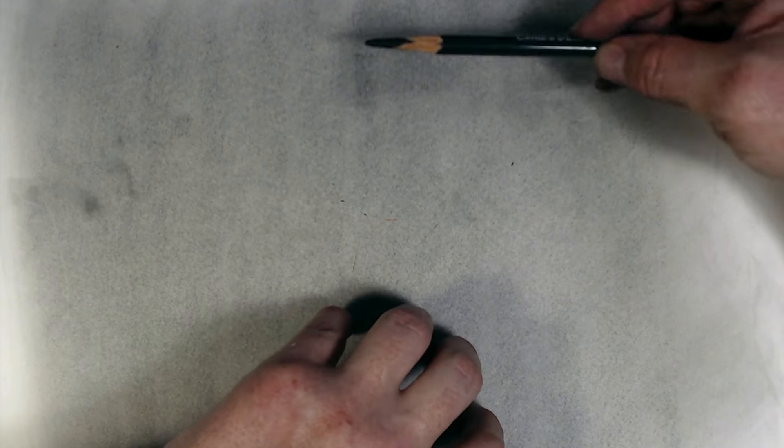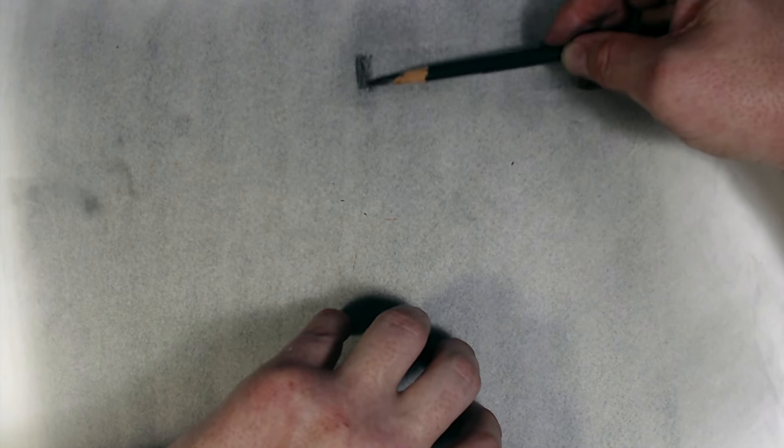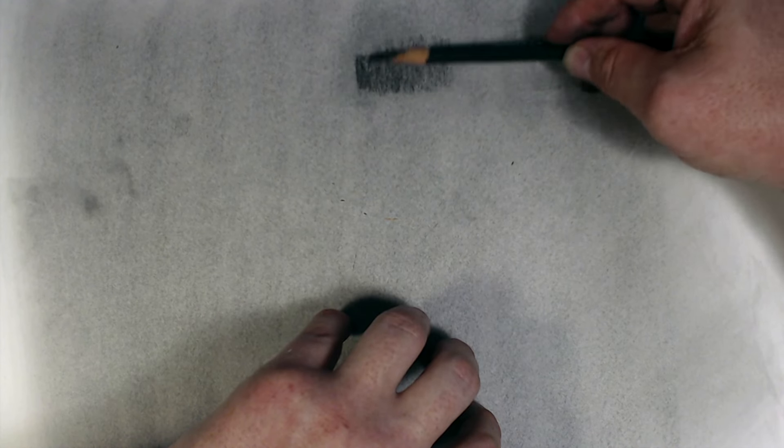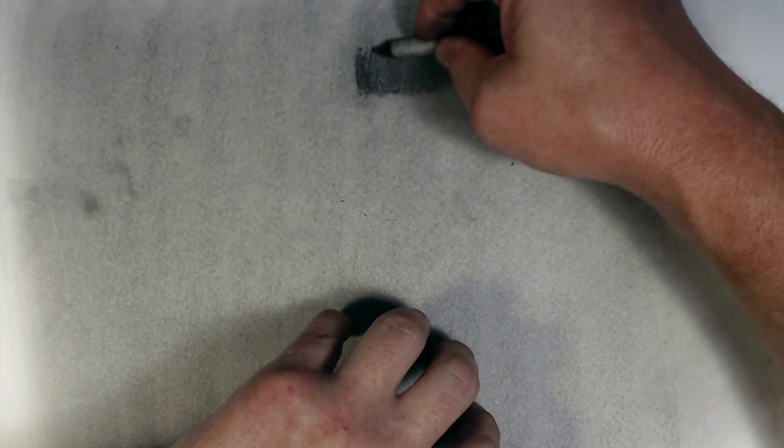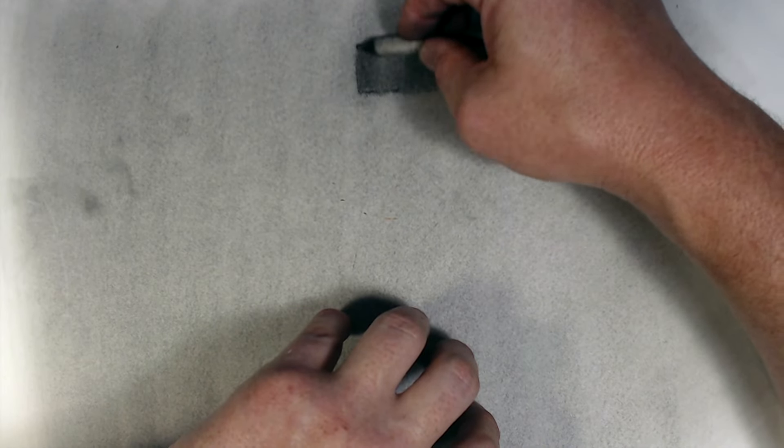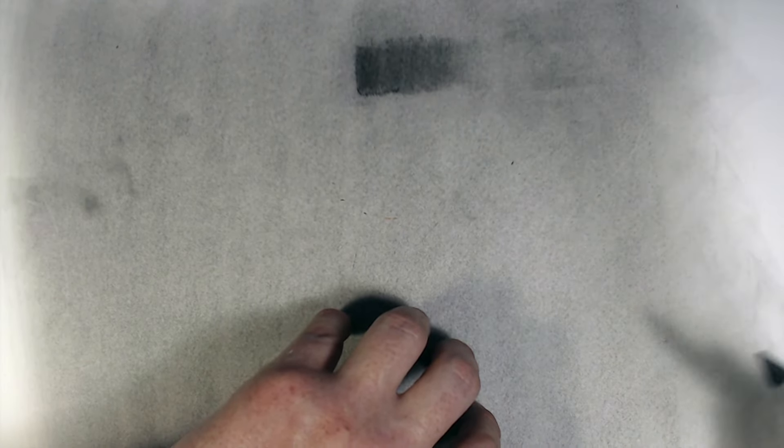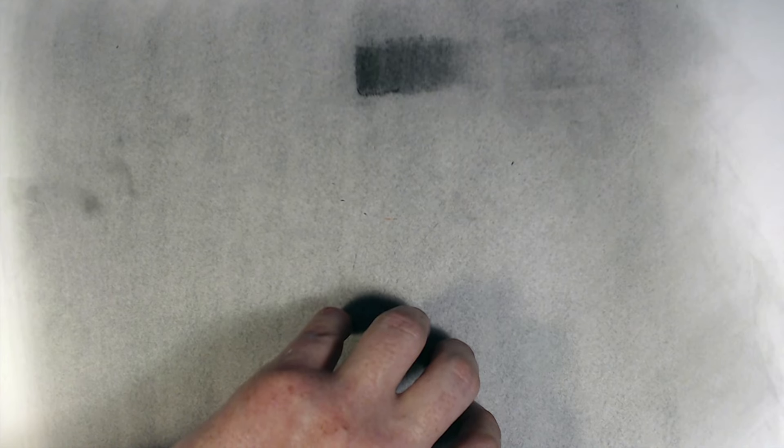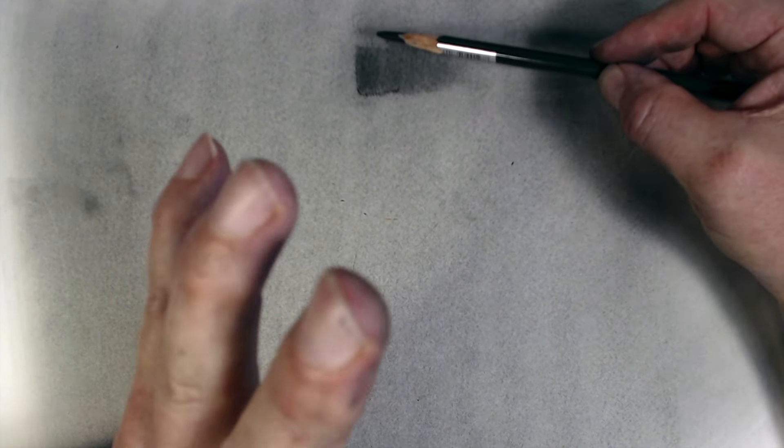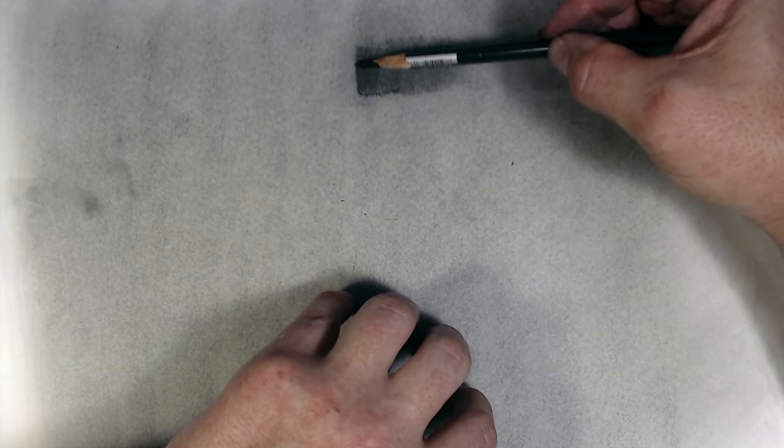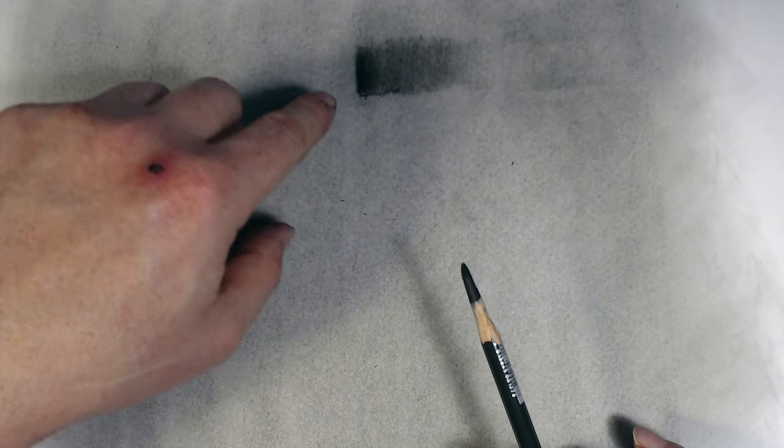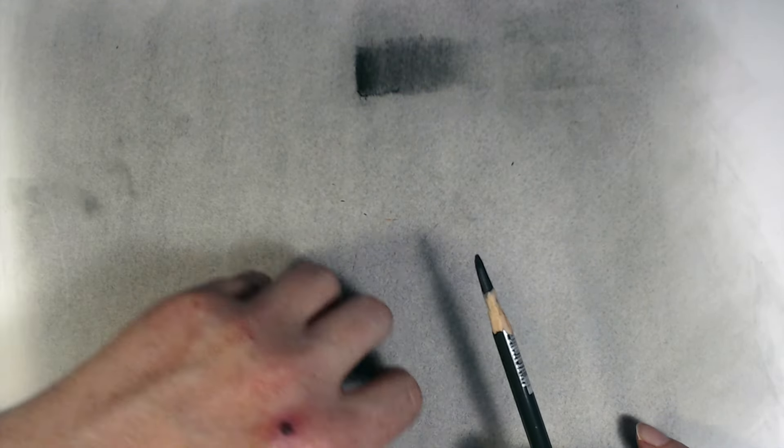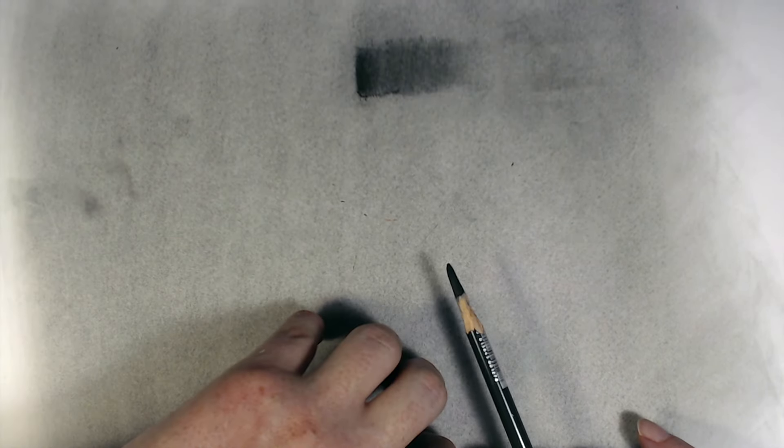The other thing you may have noticed is that the blending stump doesn't just blend. It also erases a little bit, it lightens the value. So, when we blend, it takes off a little bit of the charcoal, and lightens the value just a touch. So, the principle here is that for your very strongest darks, put them down, and don't blend them. Because if I blend them, it's going to lift off the charcoal, and we're not going to get those really strong deep dark accents that we're looking for.